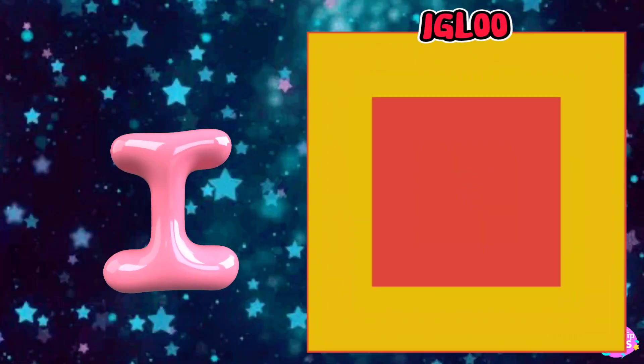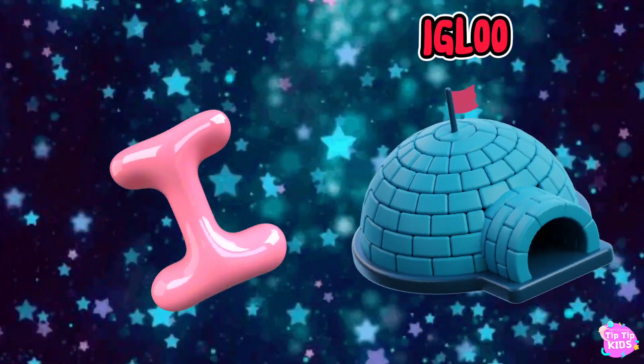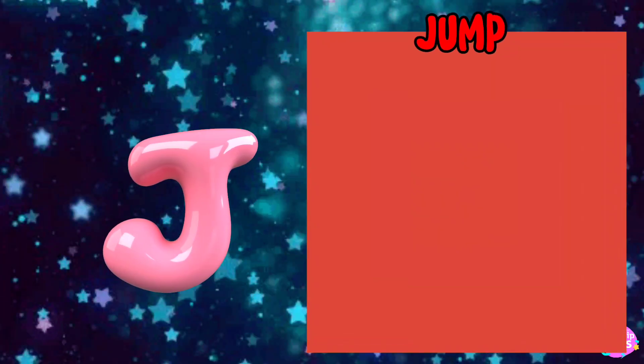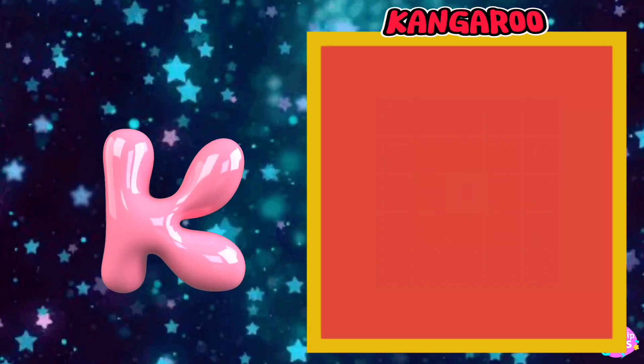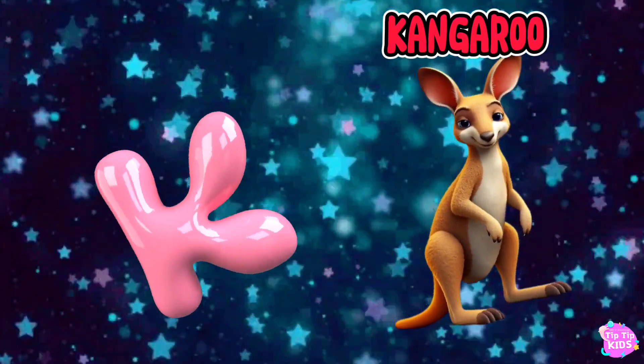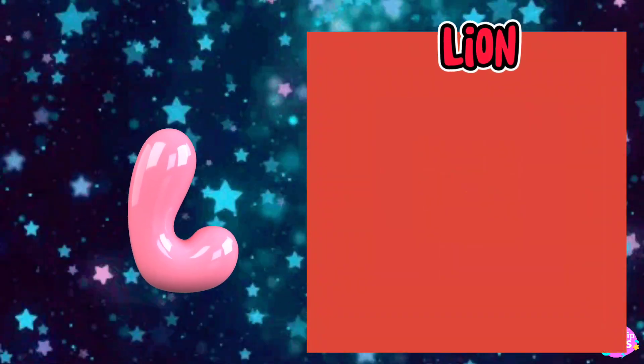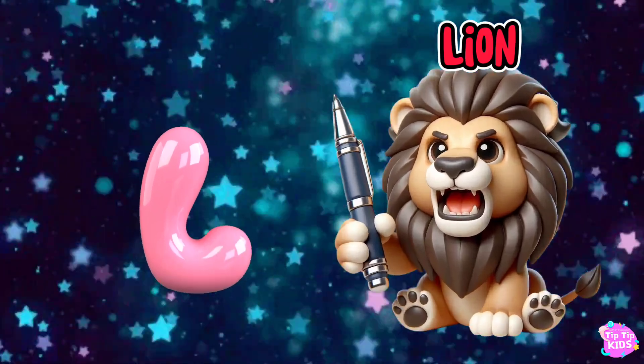I is for Igloo, I-I-Igloo. J is for Jump, J-J-Jump. K is for Kangaroo, K-K-Kangaroo. L is for Lion, L-L-Lion.